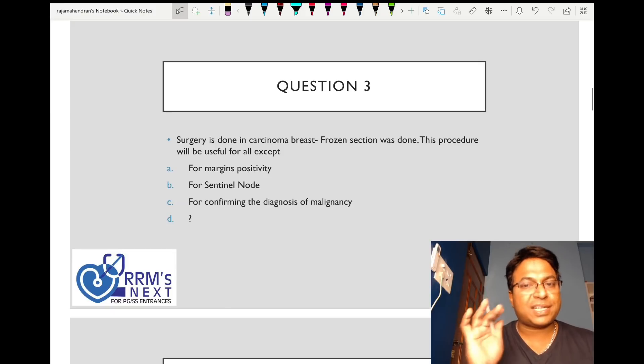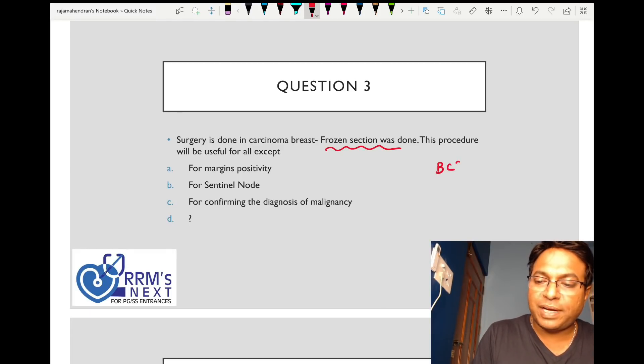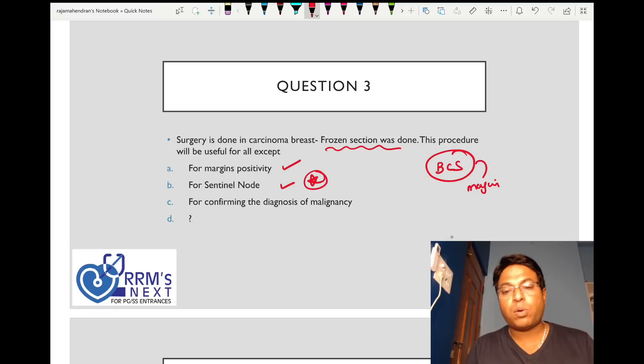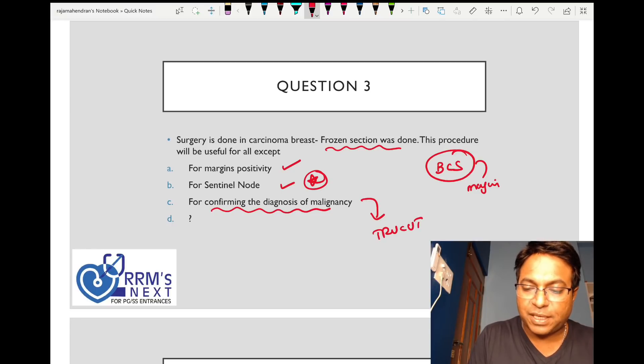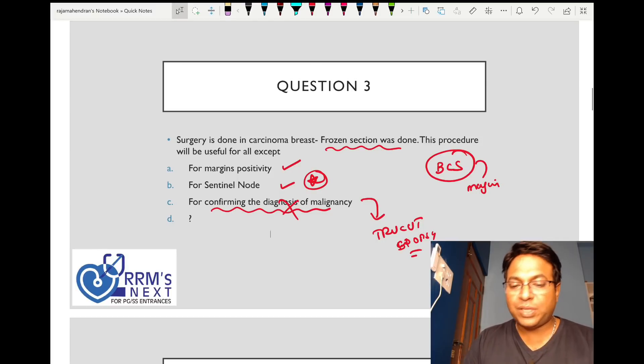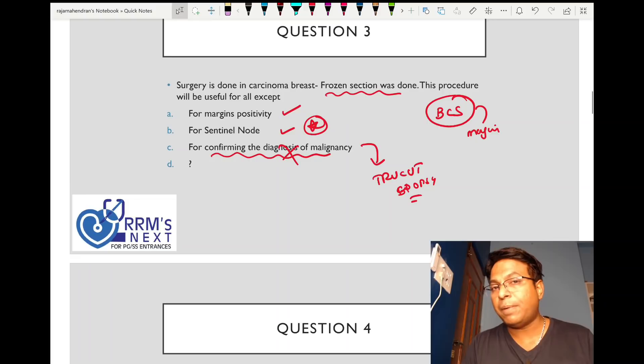Surgery is done in carcinoma breast and frozen section was done. This procedure is useful for what purpose? In cancer breast, if you're doing breast conservative surgery, we can study margins with frozen section. The major role is sentinel node biopsy. To confirm diagnosis of malignancy we don't do it because we would have already confirmed by true cut or core cut biopsy. We won't go to theater without knowing it's cancer breast.